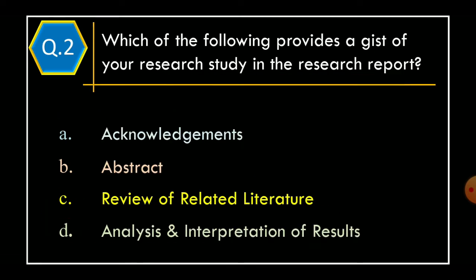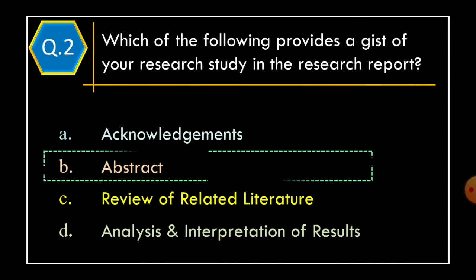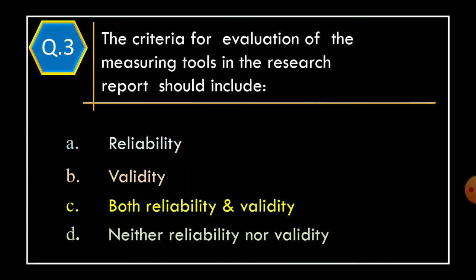Question 2: Which of the following provides a gist of your research study in the research report? Option A: Acknowledgement. Option B: Abstract. Option C: Review of the Related Literature. Option D: Analysis and Interpretation of Results. The correct option is Option B, Abstract.